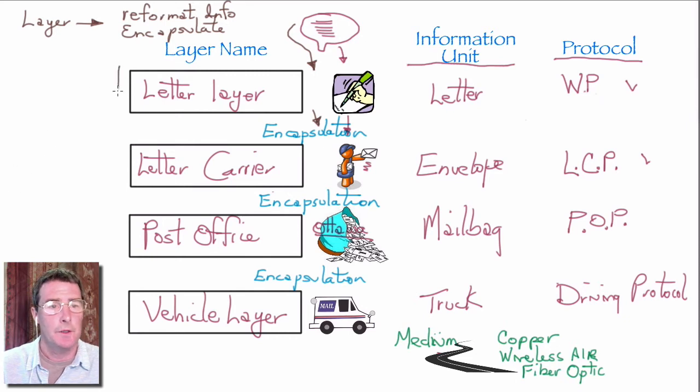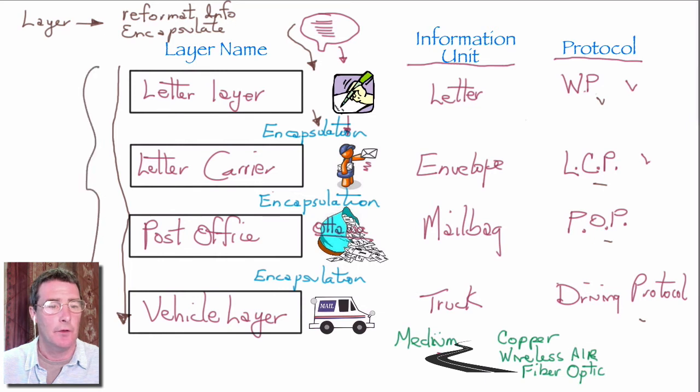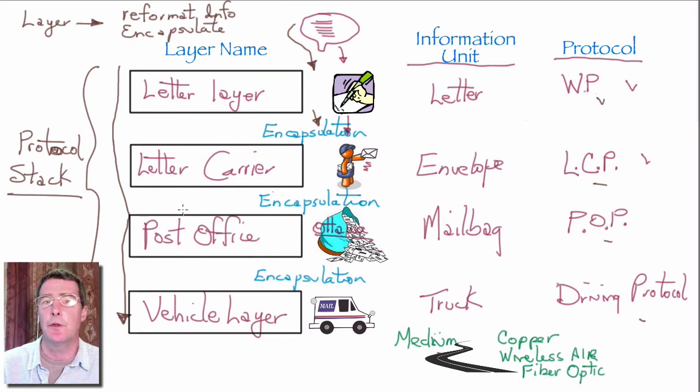So our information is moving down through the layers here. And at each layer, a different protocol is acting on the information. The collection of all the different protocol rules is called the protocol stack. You'll see this term referred to a lot when you deal with data networks.